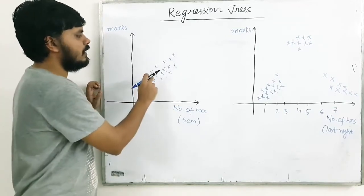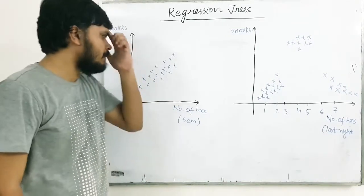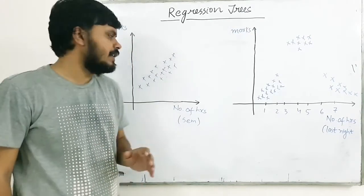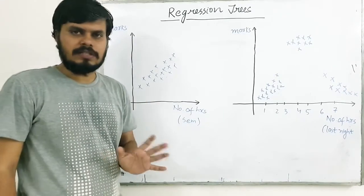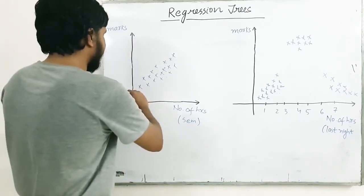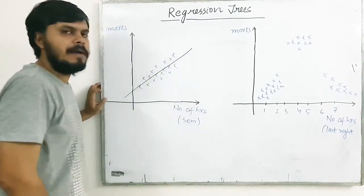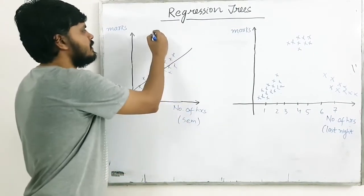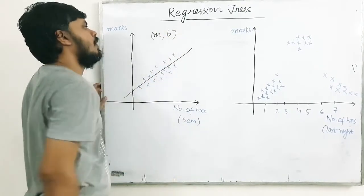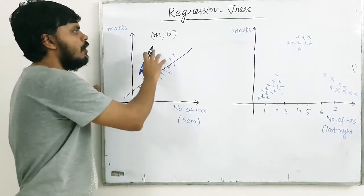So when you see that your data is linear, what you will do is apply linear regression. You try to find out this best fit line — y = mx + b. Once you find the line equation, if someone asks you how many marks a student who studied 75 hours will get, you plot that point and find y using this relationship. That is how linear regression works.